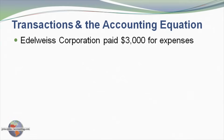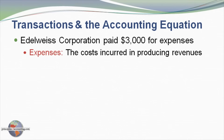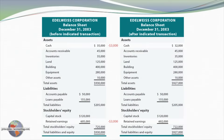Finally, let's look at Adelweiss Corporation, which paid $3,000 for expenses. Expenses are the cost incurred in producing revenues. In this particular case, $3,000 was paid out. Cash dropped by $3,000 from $35,000 to $32,000. That resource consumption caused income to go down, which also caused retained earnings to go down.